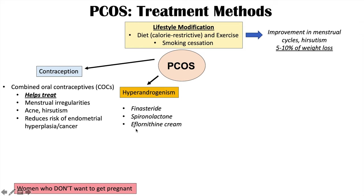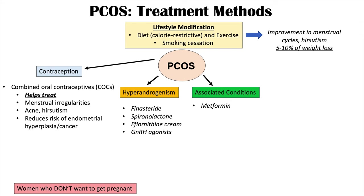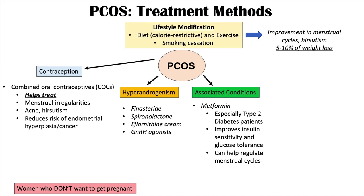The last treatment in the hyperandrogenism category is gonadotropin-releasing hormone agonists, used only when other treatments have not helped. These treatments are only for women not trying to get pregnant. The next category addresses associated conditions. Metformin is a very important treatment in PCOS patients, especially those with type 2 diabetes, as it improves insulin sensitivity, glucose tolerance, helps regulate menstrual cycles, and can assist with weight loss.